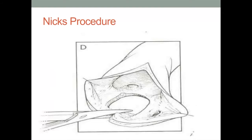The Nicks procedure is classified as a posterior enlargement technique and involves an incision down the commissure dividing the left and non-coronary leaflets. Limiting the incision to just the interleaflet triangle can enlarge the root sufficiently upwards of two to three millimeters. If a greater enlargement is required, an incision can be carried down further into the anterior leaflet of the mitral valve and the roof of the left atrium.